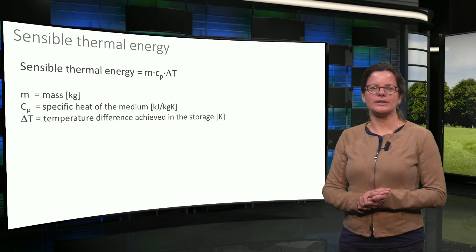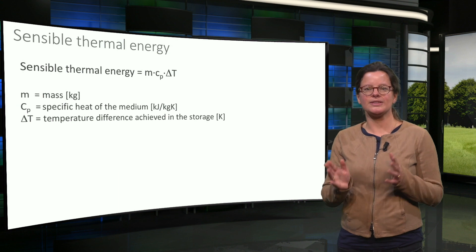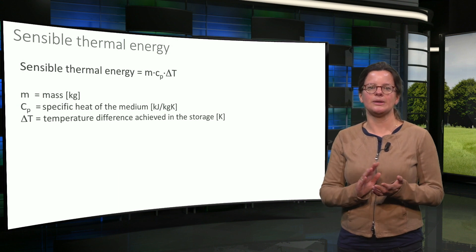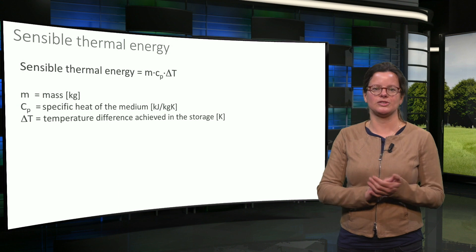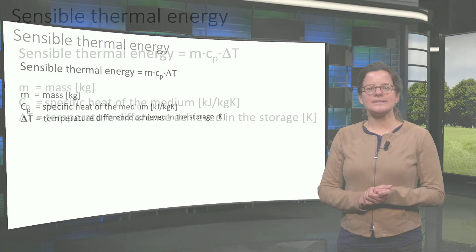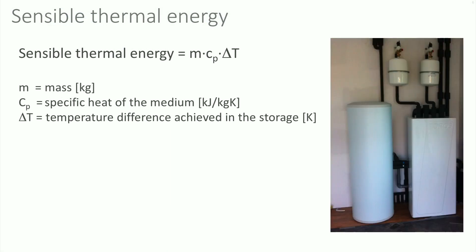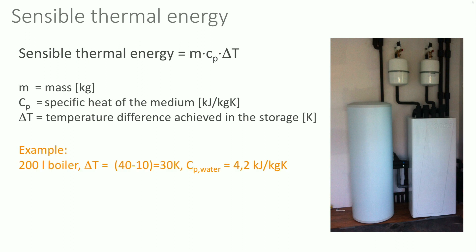The amount of sensible heat stored is calculated by multiplying the related mass with the specific heat capacity and temperature difference before and after the storage is charged or discharged. As an example, the thermal energy stored in a hot water buffer is shown. The boiler has a volume of 200 liters and the temperature is raised with 30 degrees Celsius. The specific heat capacity of water is 4.2 kJ per kg·K.